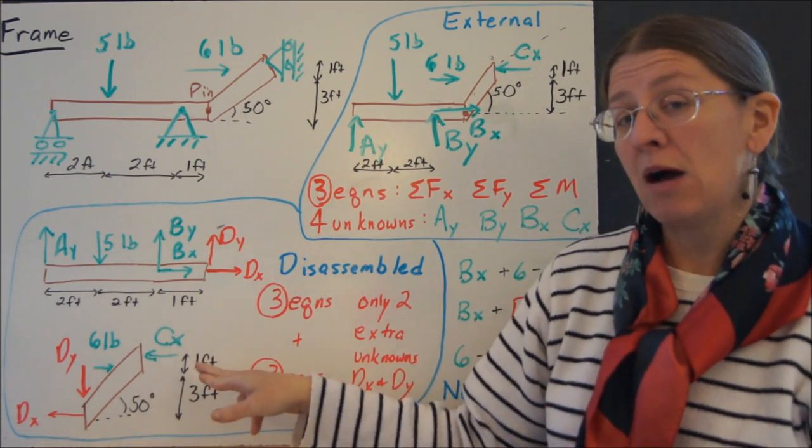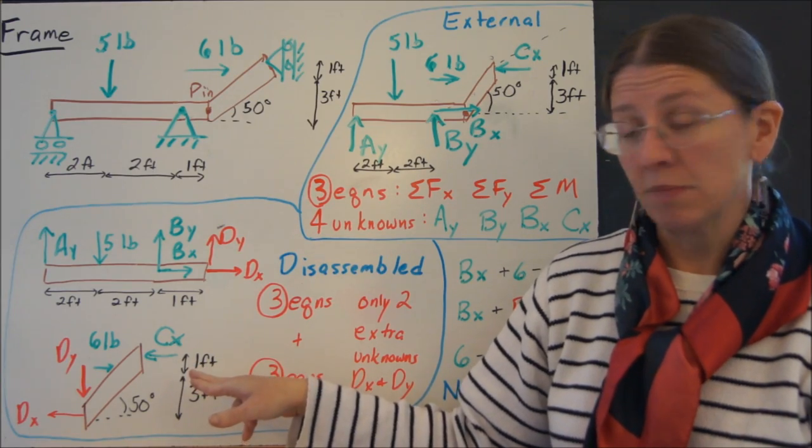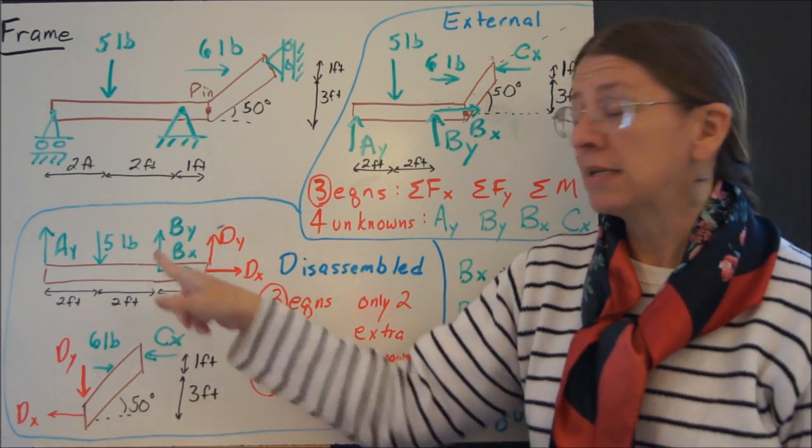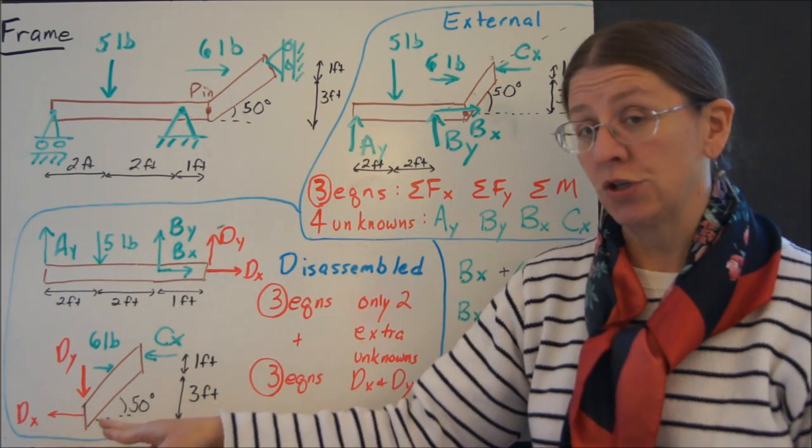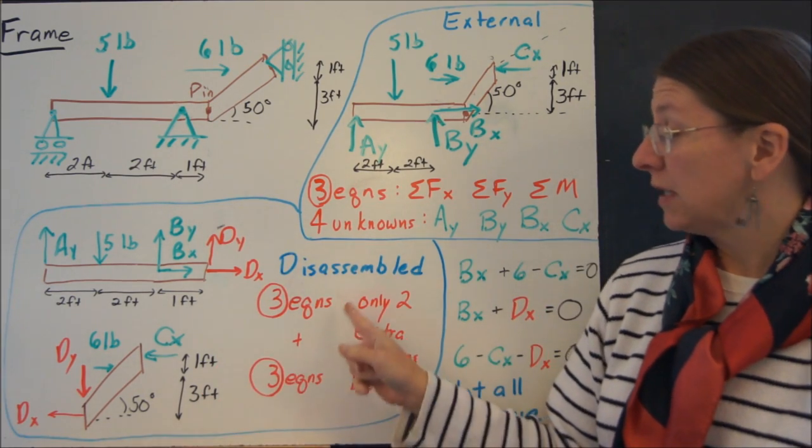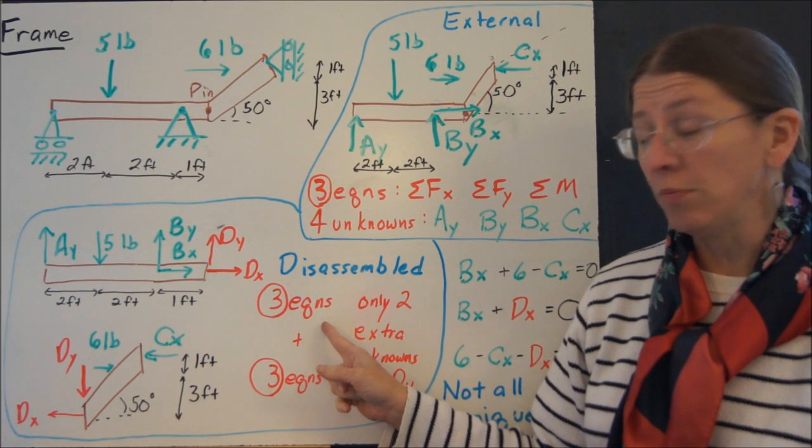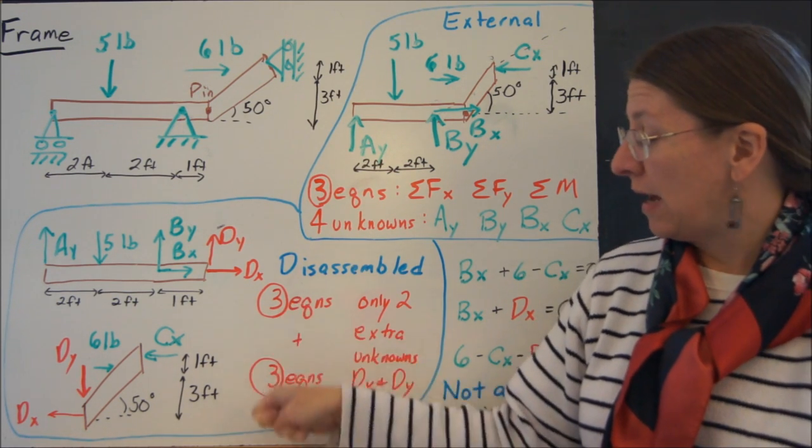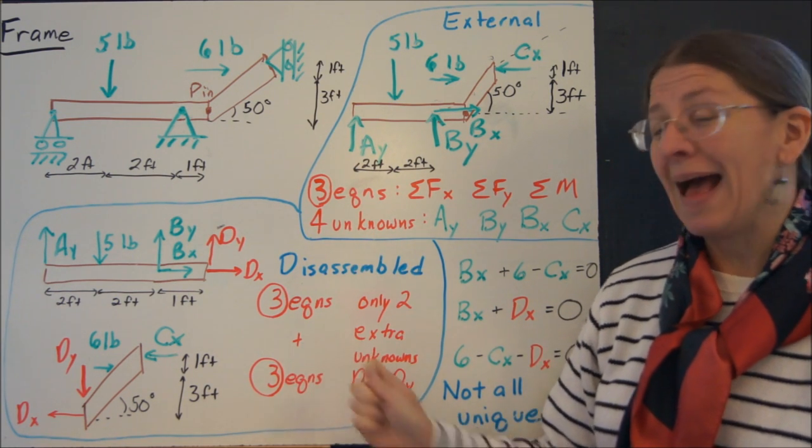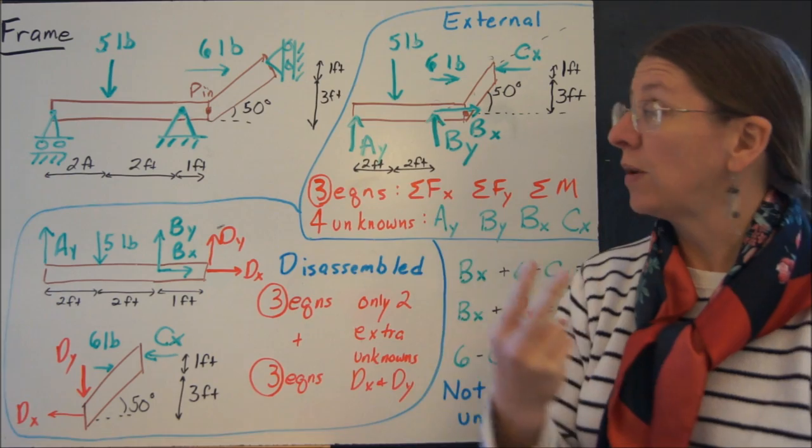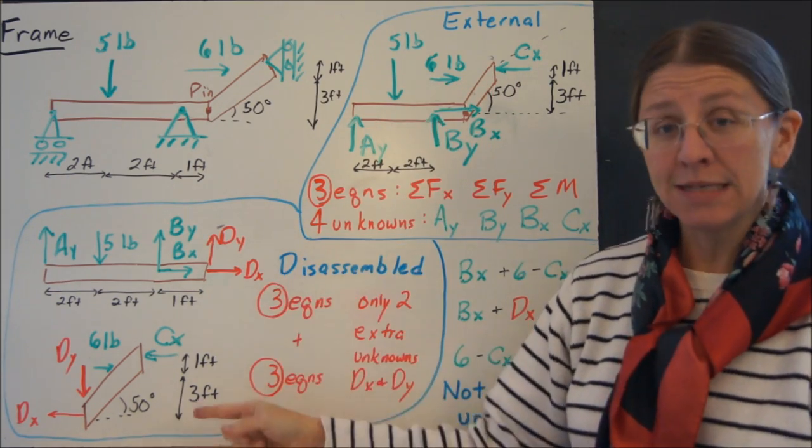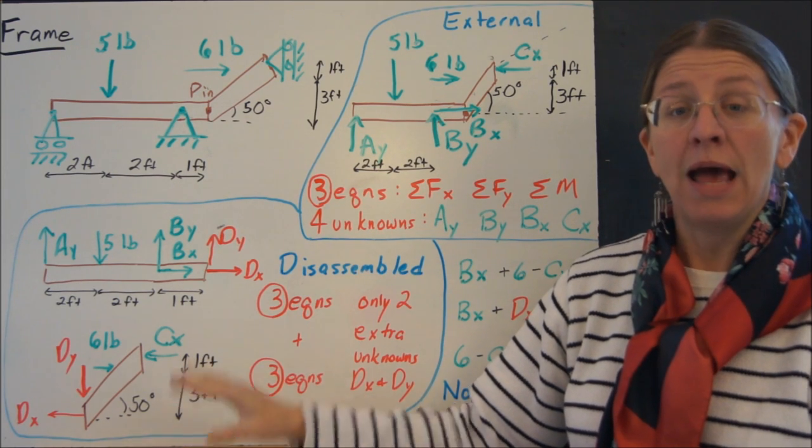These are my now two free body diagrams. I still have everything I had before. I still have the external loads, I still have the applied loads, but now I have these extra two. Each of these is a rigid body, so each of these will give me three equations of equilibrium. The big thing here is that while I now have six equations, I have added three equations but I've only added two unknowns. So I used to have four unknowns and three equations. Now I have six unknowns and six equations, and I can solve that.